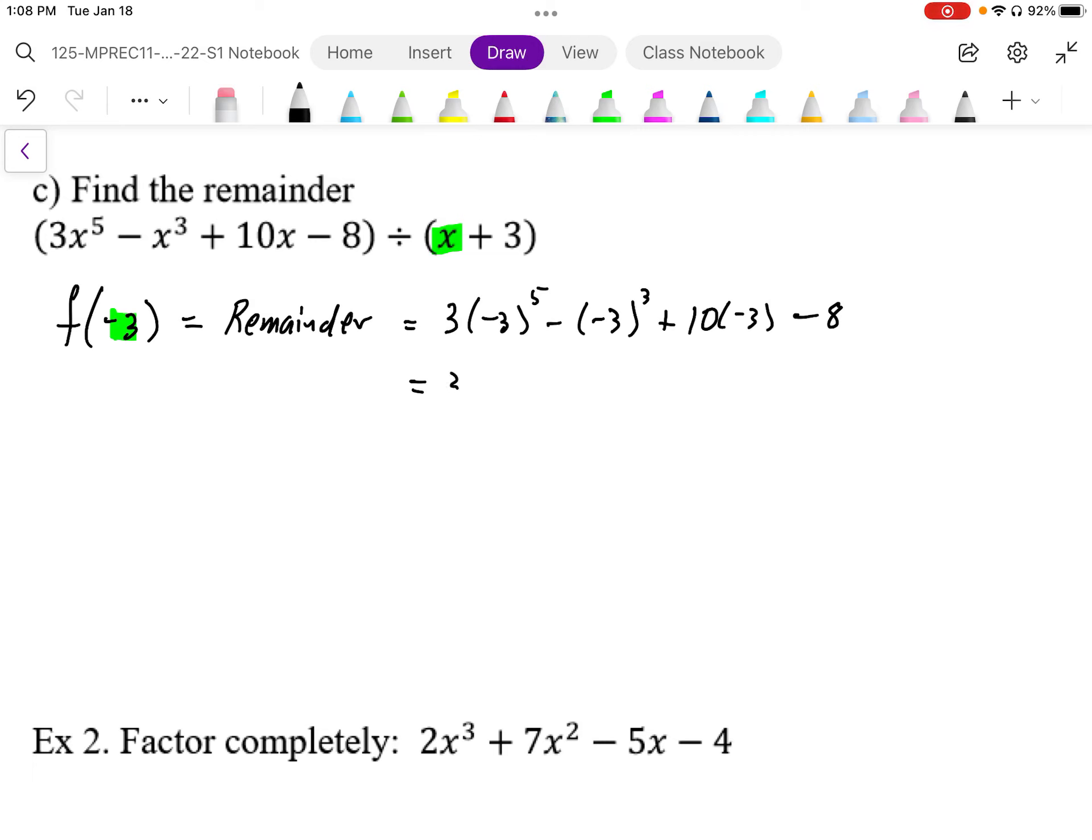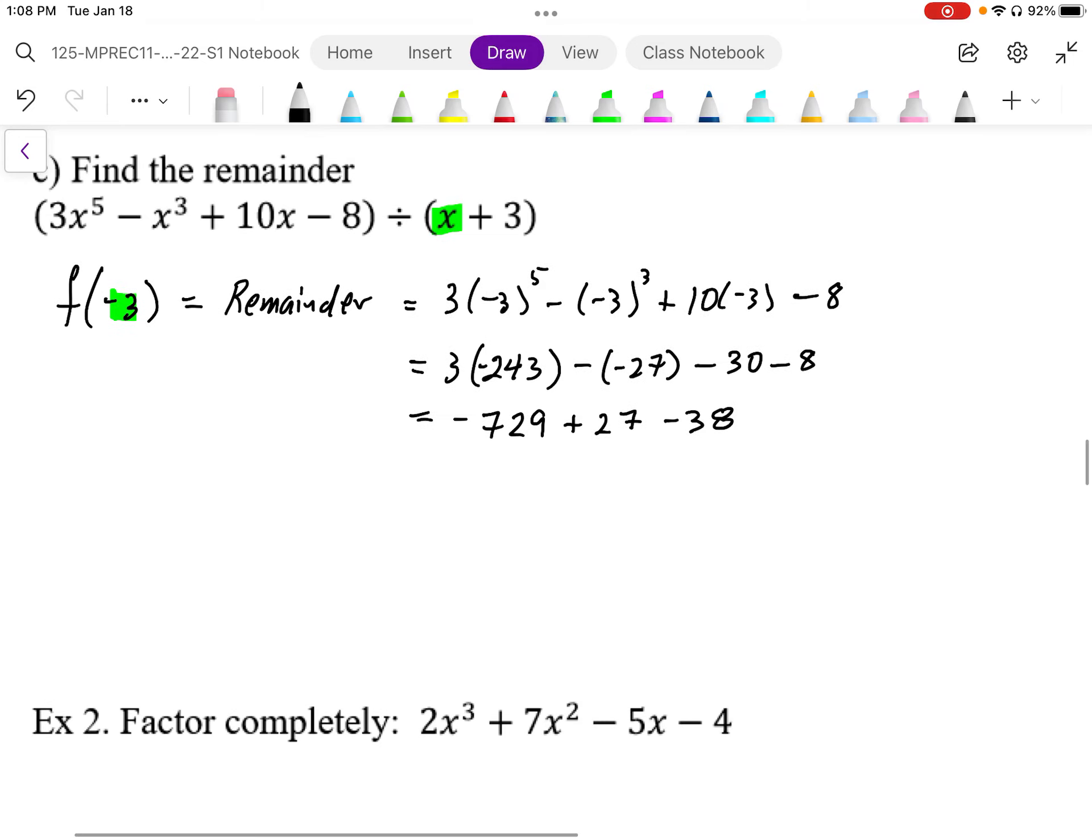Negative 3 to the power of 5 is going to be 243 negative minus negative 27 minus 30 minus 8. So working this out, this is negative 729 plus 27 minus 30. I'm going to combine those two terms, so I'm going to minus 38.